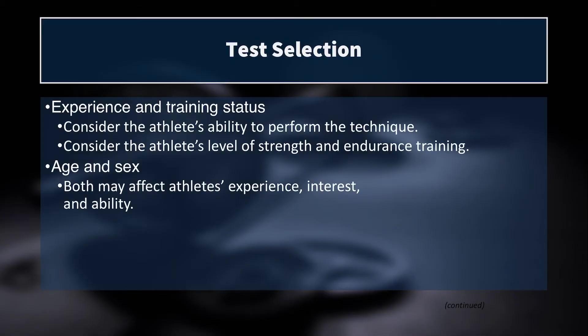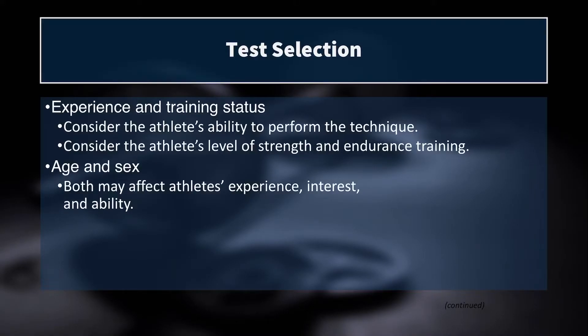We also have to keep in mind the experience and training status of our athletes, as well as their age and sex. We have to consider the athlete's ability to perform the correct technique. If you're doing a one-rep max back squat with somebody who's never weight trained before, you may need to change that test or train them up first. In some cases, a test might not be suited to an athlete because they don't even have the prerequisite strength or endurance to complete it.